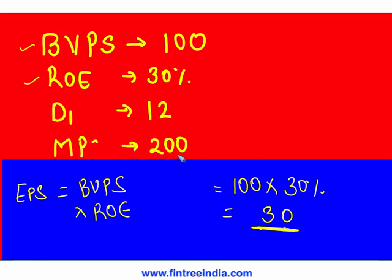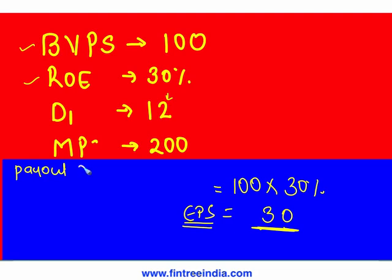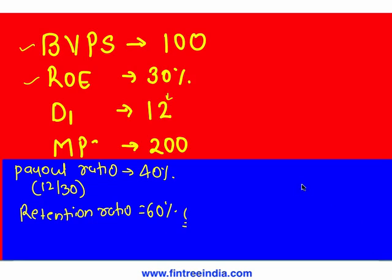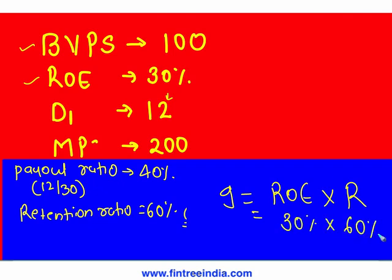Now that EPS is 30 and dividend paid is 12, dividend payout ratio equals 12 divided by 30 equals 40 percent. Therefore retention ratio is 60 percent. Sustainable growth rate g equals ROE times retention ratio: 30 percent times 60 percent equals 18 percent.